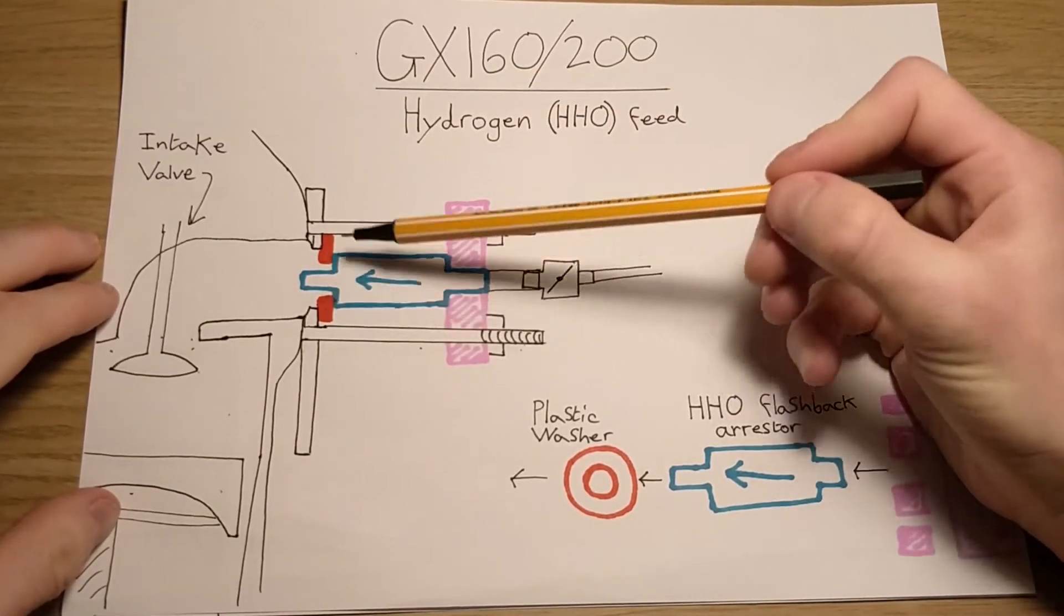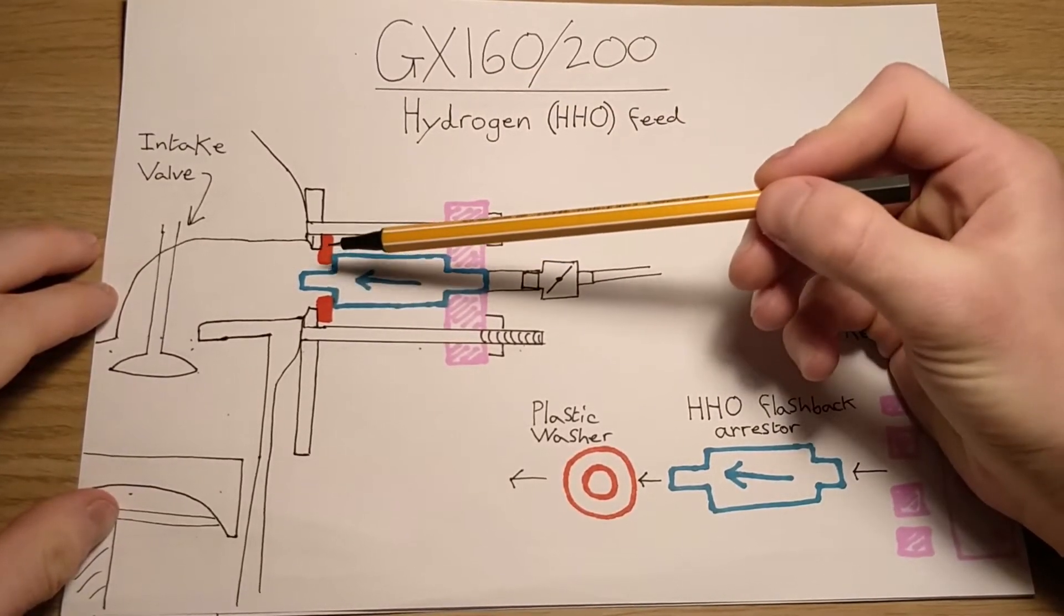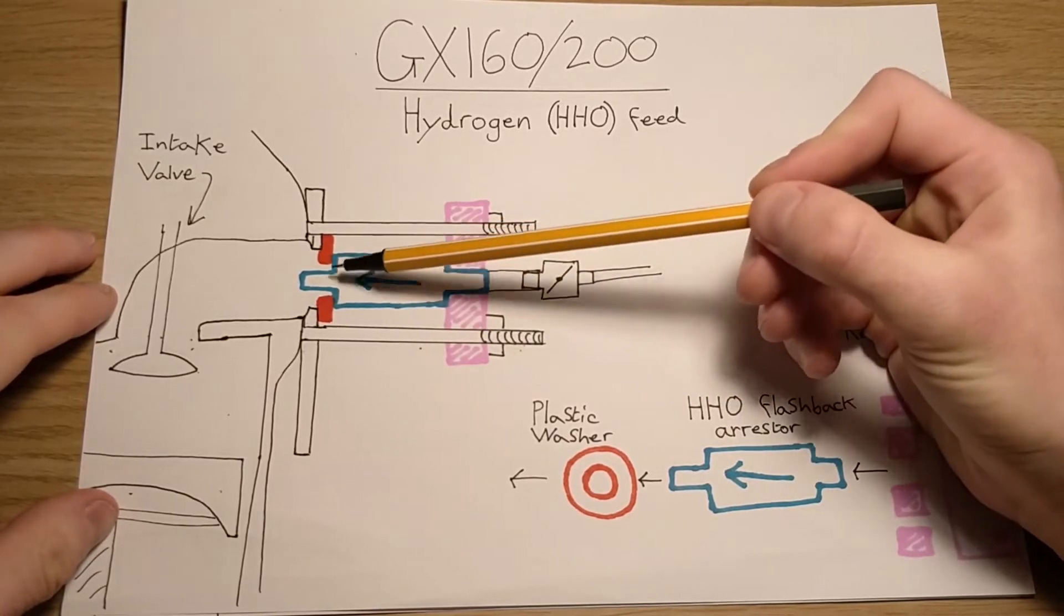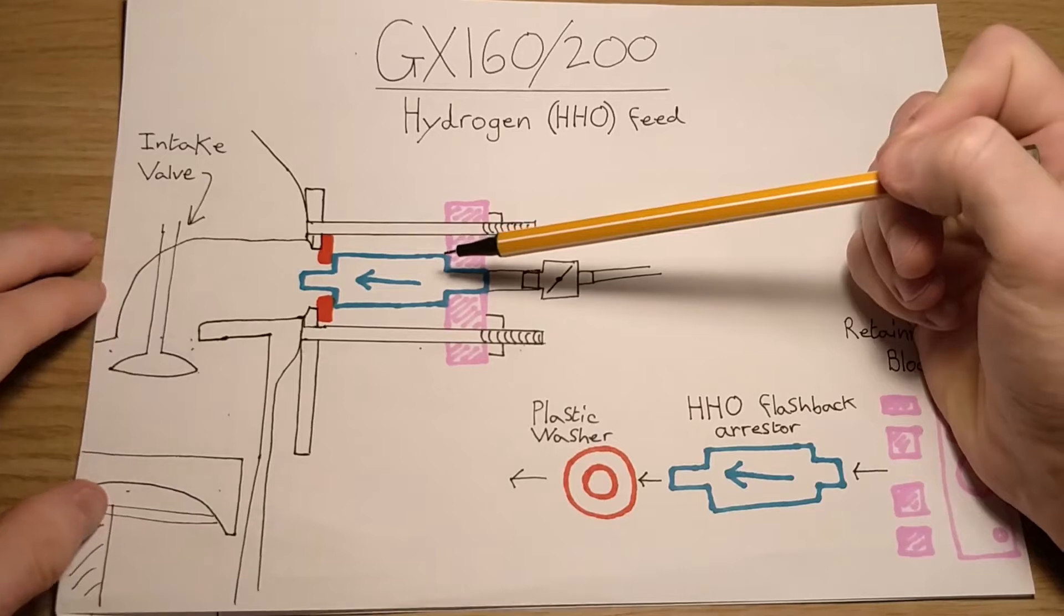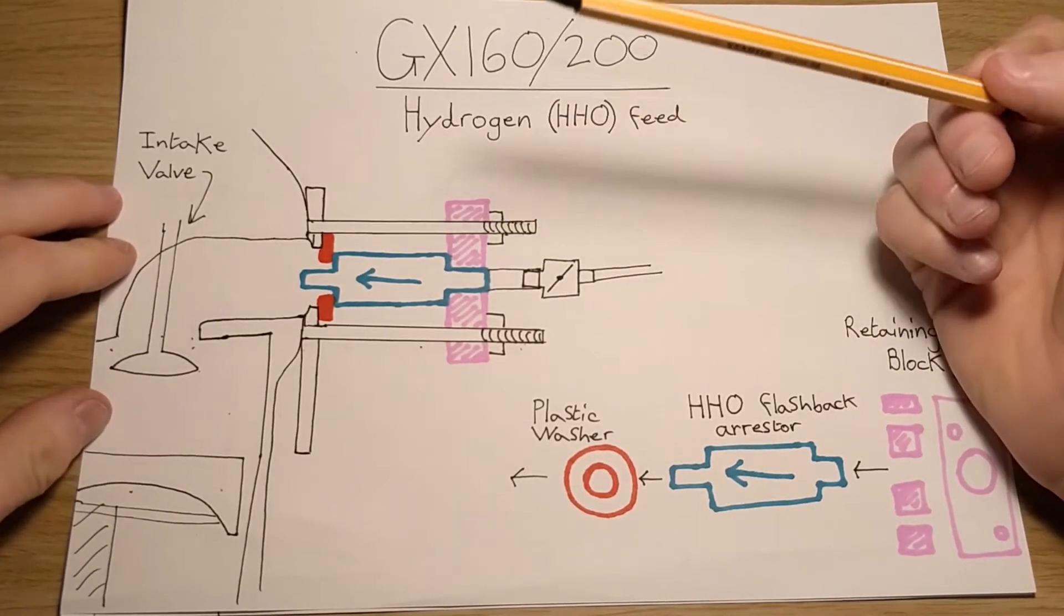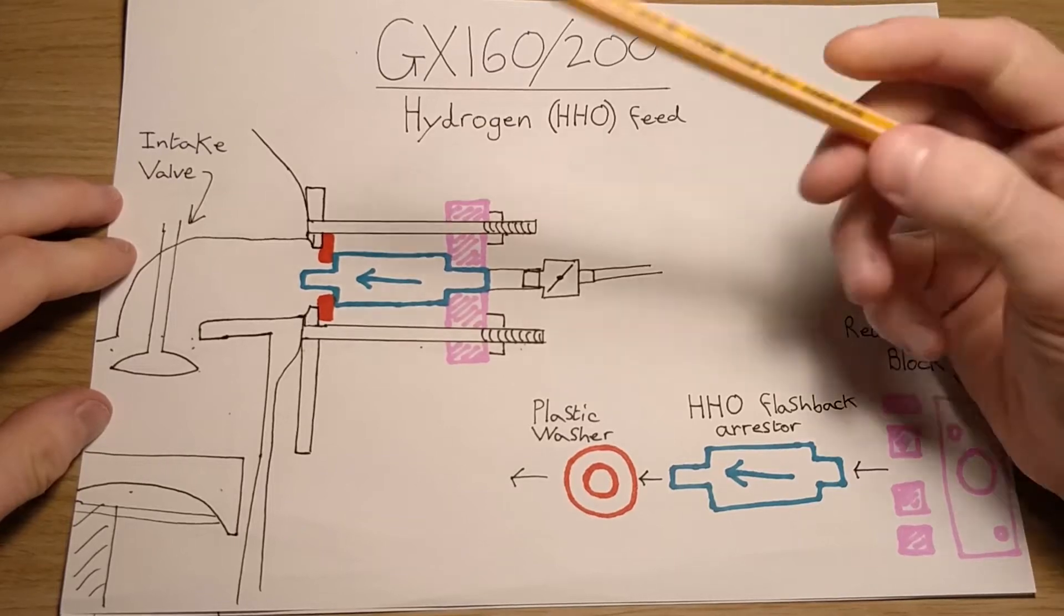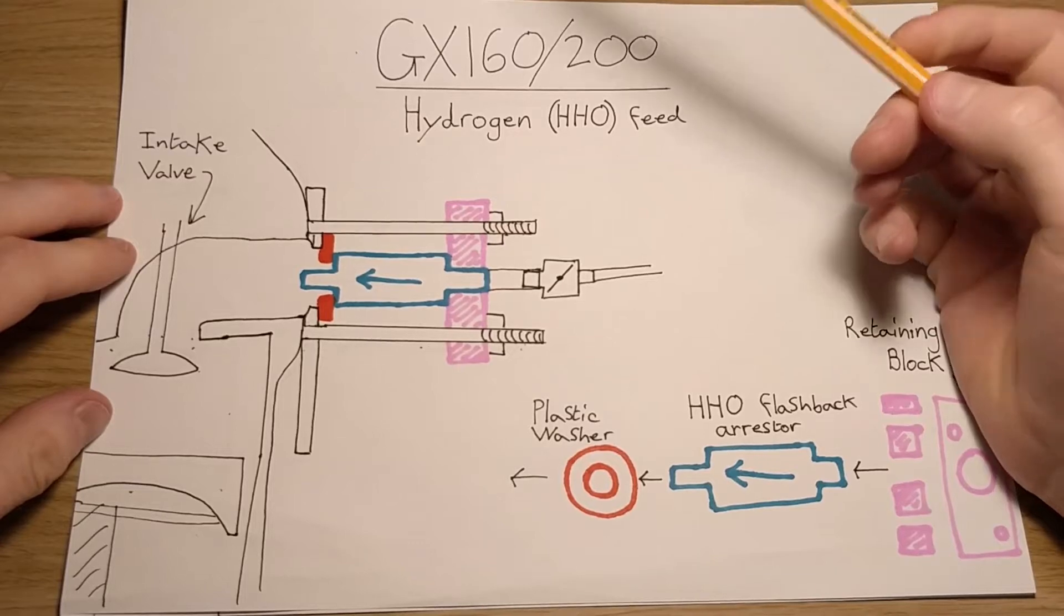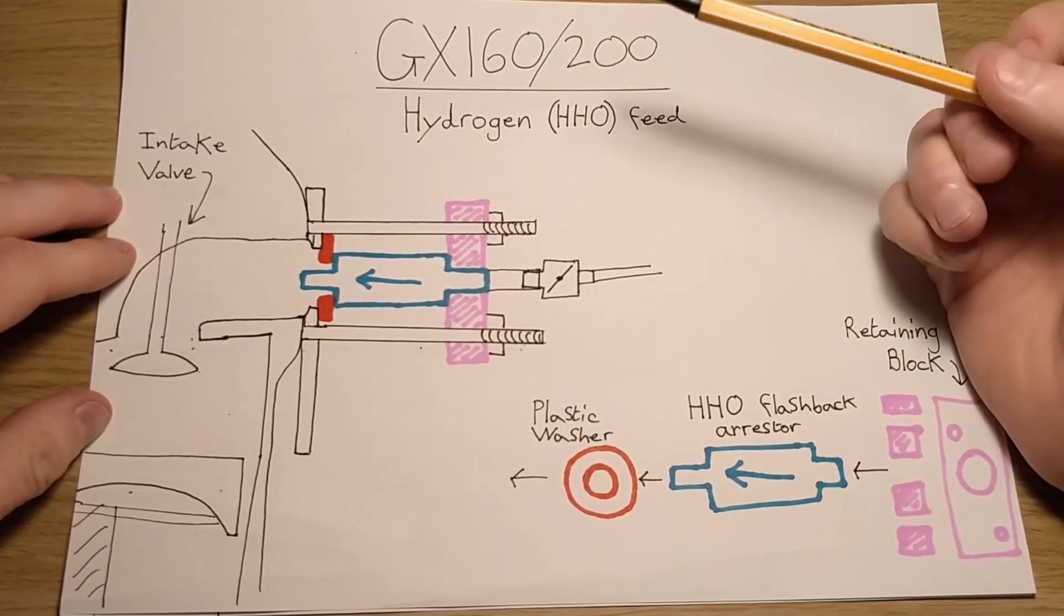So we've got the washer there. The reason why we're using the washer is because the size difference between the gap on the plastic plate here is an actual flashback arrester I used, which I'd recommend. If you can't find it, by all means send me an email or I'll try and send you a link. You can buy them in America, these flashback arresters, and they aren't expensive.